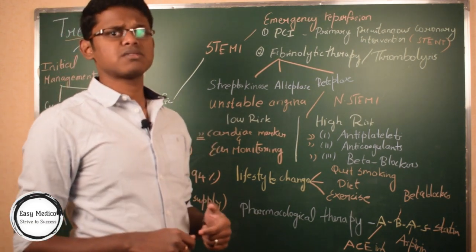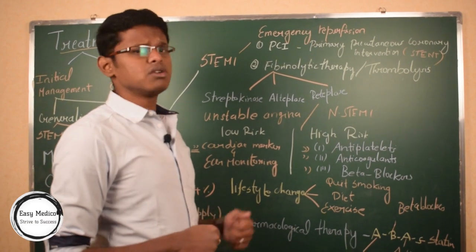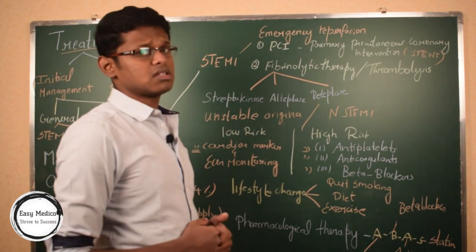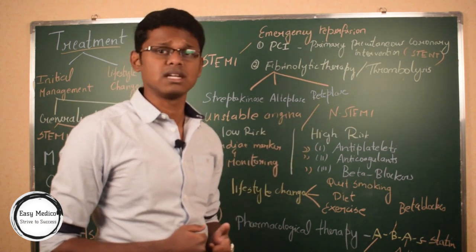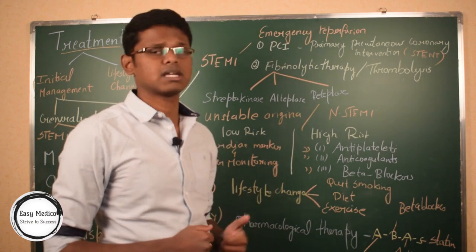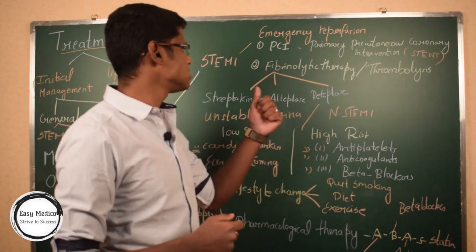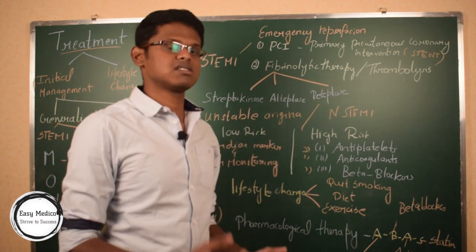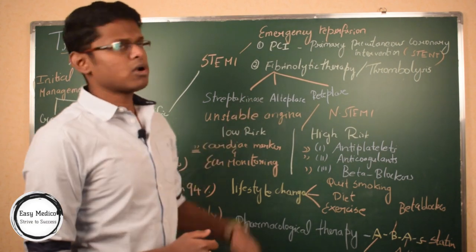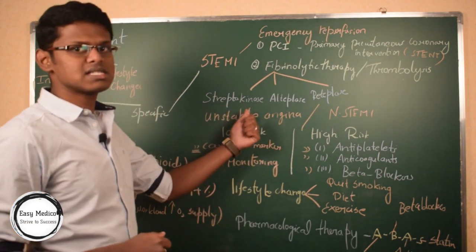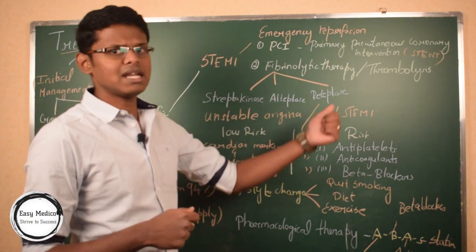For specific treatment, once we diagnose whether it's STEMI, non-STEMI, or unstable angina, we move on to specific treatment. For STEMI, we use emergency reperfusion: the first method is PCI — primary percutaneous coronary intervention. In rural or small hospitals where PCI is not possible, we use fibrinolytic therapy or thrombolysis, meaning breakdown of the thrombus. This fibrinolytic therapy uses three drugs: streptokinase, alteplase, and reteplase. In recent times, streptokinase is no longer used; alteplase and reteplase are used instead.